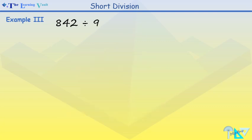Now, we've got our final example. Example 3. 842 divided by 9. You can pause and have a go. Now, let's lay out our numbers nicely.